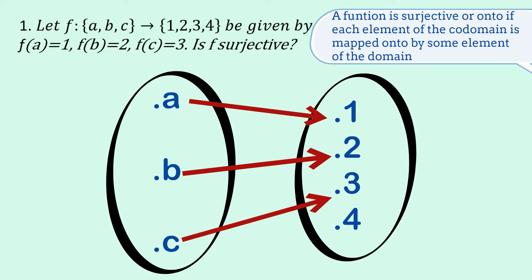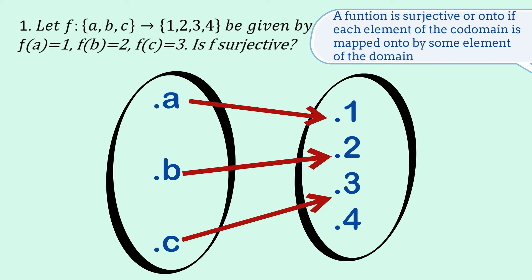So when we look at the co-domain here, one, two, three, four, we ask the question: is every element of the co-domain mapped onto by this function f? The answer is no. We can see that one, two, three are mapped by f, but four isn't.